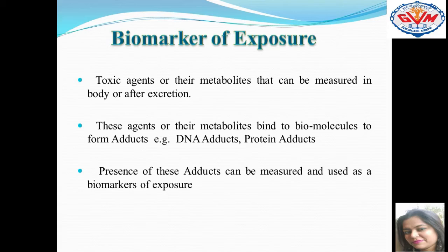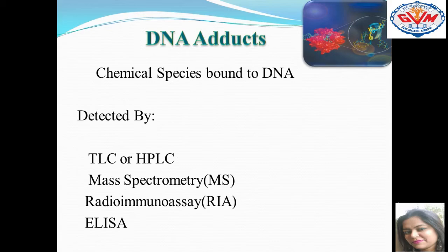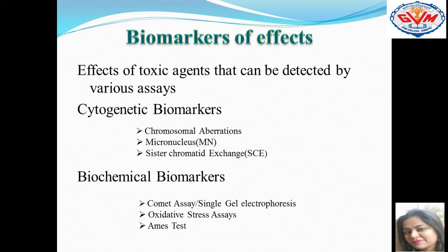Different techniques are used to measure these adducts, such as TLC, HPLC, mass spectrometry, radio immunoassay, or the ELISA technique. Once confirmed that the body has been exposed and metabolites are present in the excretory system, we proceed to biomarkers of effect, which show that toxic agents have created damage at the cytogenetic and biochemical level. For cytogenetic biomarkers, we have chromosomal aberration, micronucleus, and sister chromatid exchanges. For biochemical biomarkers, we have comet assay, oxidative stress assays, and EAMS test.